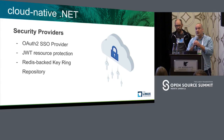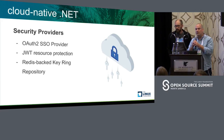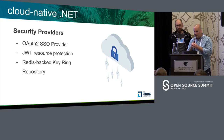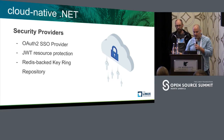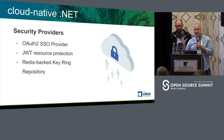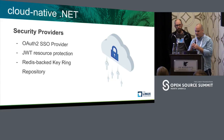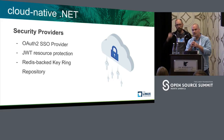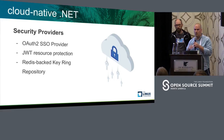SteelToe also provides security providers: an OAuth 2 SSO provider and a provider for JWT resource protection — for example, using a JWT token to access a secured REST endpoint. In addition, SteelToe makes available an additional security provider that lets you use a Cloud Foundry-based Redis instance for the ASP.NET Core data protection key ring store. By default ASP.NET Core data protection writes keys to disk, which is not cloud-friendly, so we've extended it to write those keys to a Redis backing store.